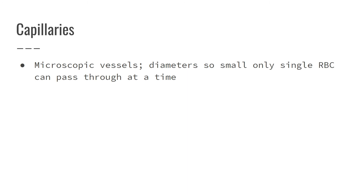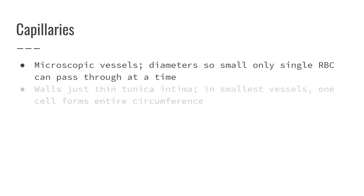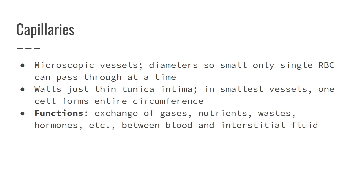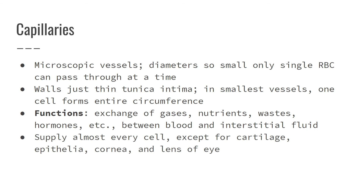Capillaries are microscopic — so small that red blood cells can only pass through single file. They're this small so that gas exchange can occur through their walls. They only contain the tunica intima. Gas exchange includes nutrients like carbohydrates, proteins, waste products like urea, carbon dioxide, and hormones. As a throwback to semester one: capillaries supply every cell except cartilage, because cartilage is avascular, and epithelial tissue, which is also avascular. The cornea is an exception — it gets its nutrients from the vitreous fluid in the eye and the humor.